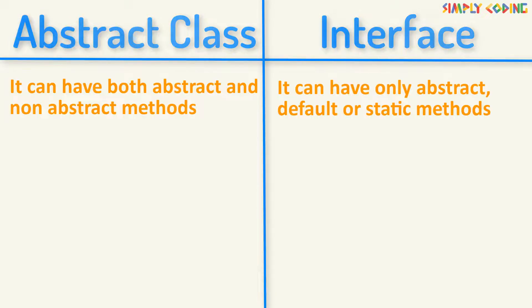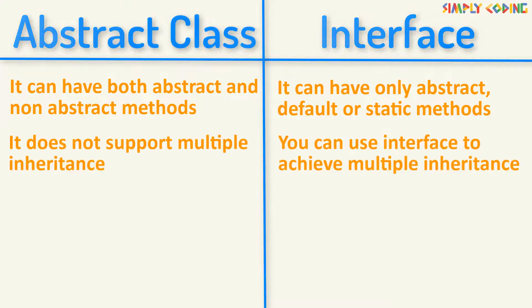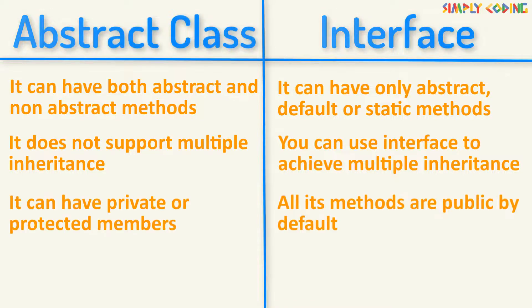So what is the difference between an abstract class and an interface? An abstract class can have both abstract and non-abstract methods, but an interface can contain only abstract, default, or static methods. An abstract class does not support multiple inheritance, but you can use interfaces to achieve multiple inheritance. An abstract class can have private and protected members, but in an interface, all methods are public by default.